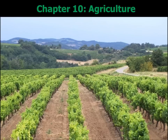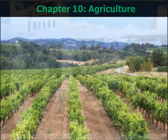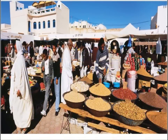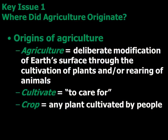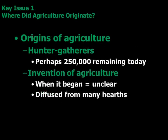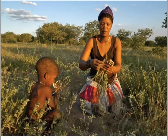Good morning, boys and girls. Mr. S. with Chapter 10 Review on Agriculture — 40 questions. Here we go. Look at the differences between MDCs and LDCs when it comes to agriculture. Some of the key common differences are the amount of crops produced per year, and more importantly, the income they derive from it.